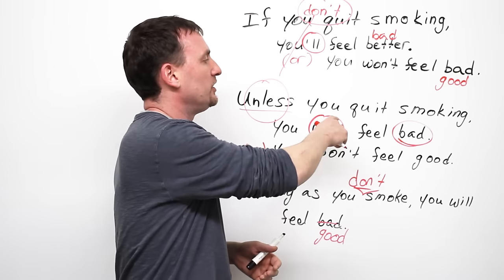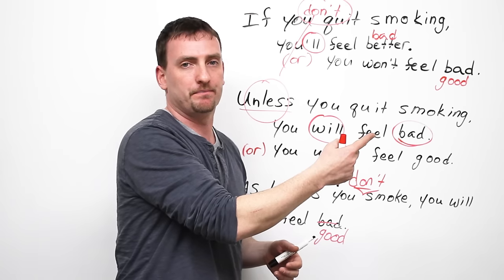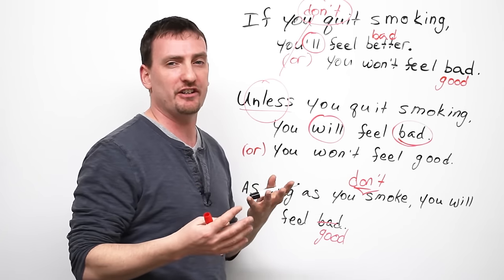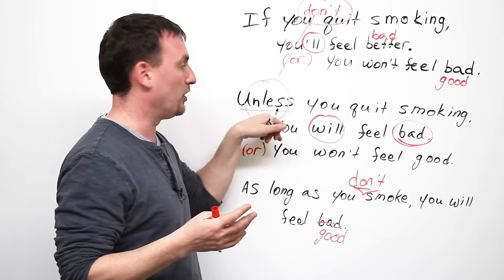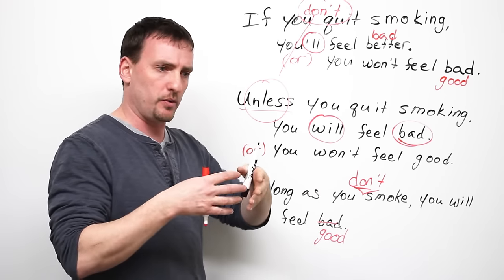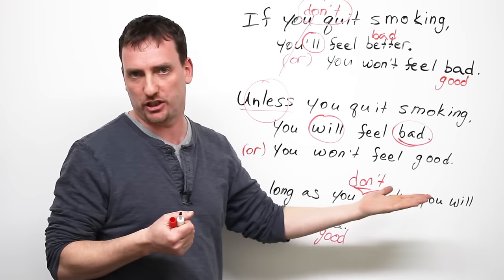We don't say unless you don't quit smoking. Okay? It's a double negative. It sounds very strange. It feels very strange. We don't use it. We go with this negative and we have the matching consequence. Consequence basically means the result of the action.